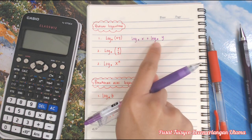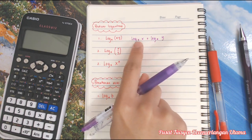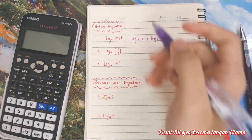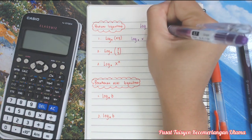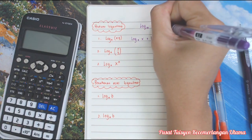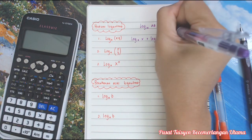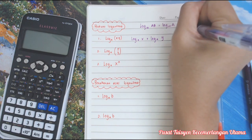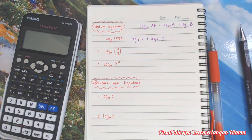Kenapa masih a? Tu dia punya asas lah. Log berapa, log berapa kan? Ikutlah. Contohnya di sini, log 10 ab. Dia still akan jadi log 10 a plus log 10 b. Kena ingat.